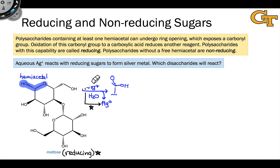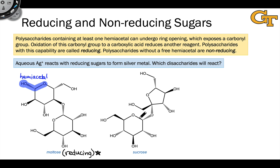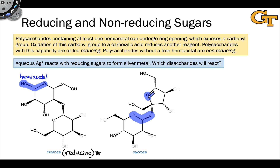Now let's look at the other sugars, beginning with sucrose. In looking for hemiacetals within the structure of sucrose, we should really focus on the anomeric carbons — these carbons with two bonds to oxygen. If we look within the glucose unit, we see that the anomeric carbon in glucose within the sucrose structure is part of an acetal, not a hemiacetal. And if we look at the fructose unit, we again see that the anomeric carbon is part of an acetal, not a hemiacetal.